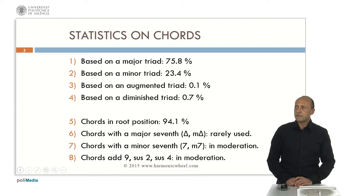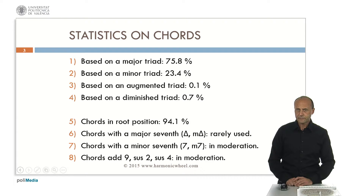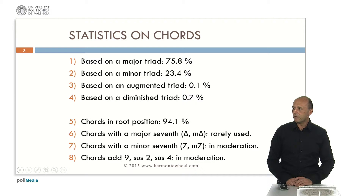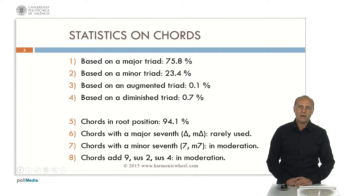I obtained statistics on chords. About three quarters of chords are based on a major triad and the other quarter are based on a minor triad. Chords with an augmented triad or a diminished triad are rarely used. Regarding the structure of chords, more than 90% of them are in root position. The addition of a major seventh is rarely used, both in a major chord or on a minor chord. The addition of a minor seventh is used in moderation, thus leading to dominant seventh chords and minor seventh chords.